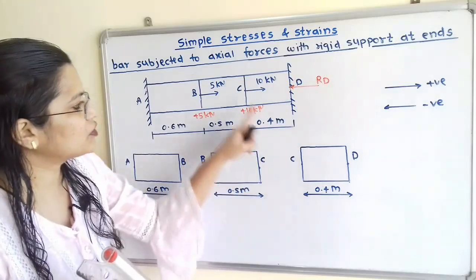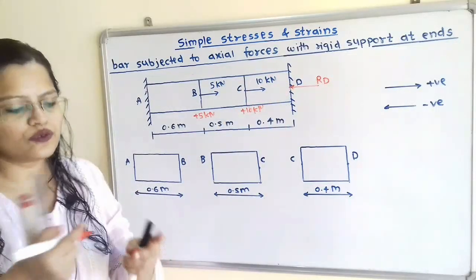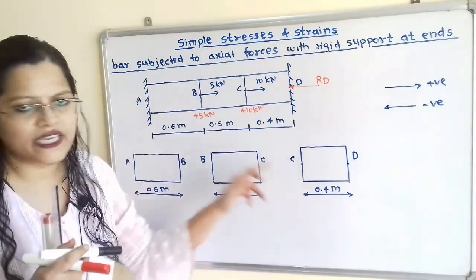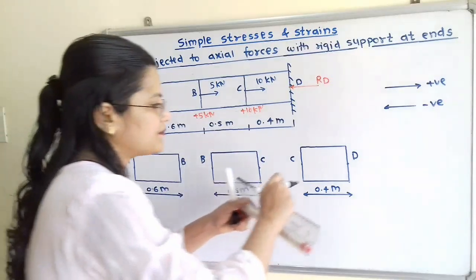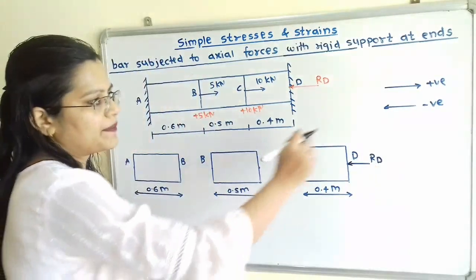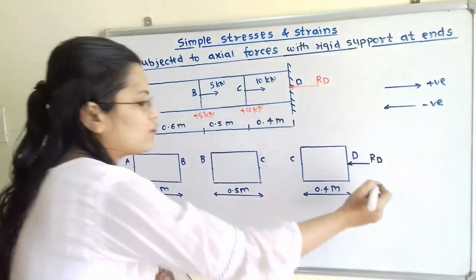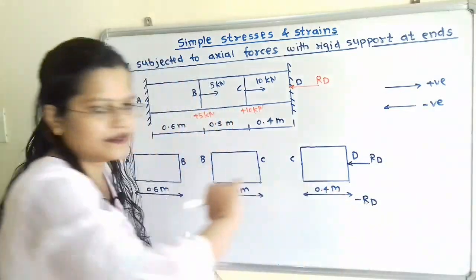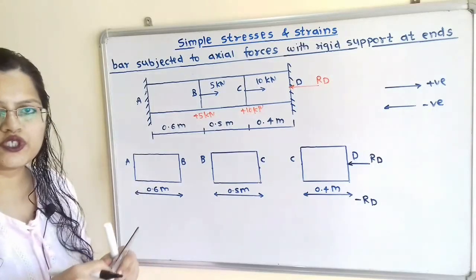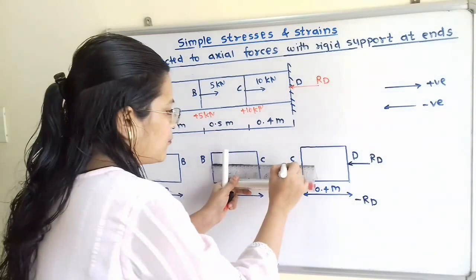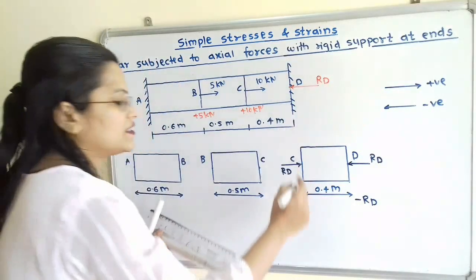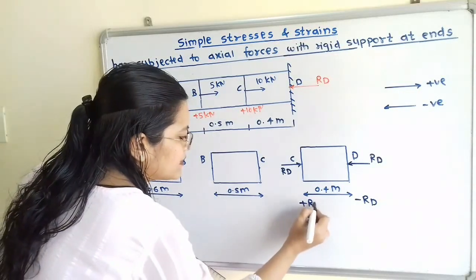If we consider portion CD as a free body diagram, the body is in equilibrium. Rd acts towards the left hand side, so we show its magnitude as minus Rd. To balance this Rd, at face C we show the same magnitude but opposite direction — that is plus Rd, with direction towards the right hand side.